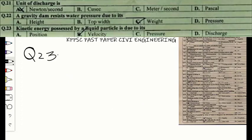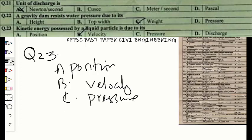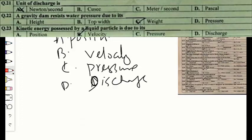Question number twenty-three: the kinetic energy possessed by a liquid particle is due to its option A — position, option B — velocity, option C — pressure, or option D — discharge. The kinetic energy of a mass moving with velocity equals half mass times velocity squared. The correct option is B — velocity.